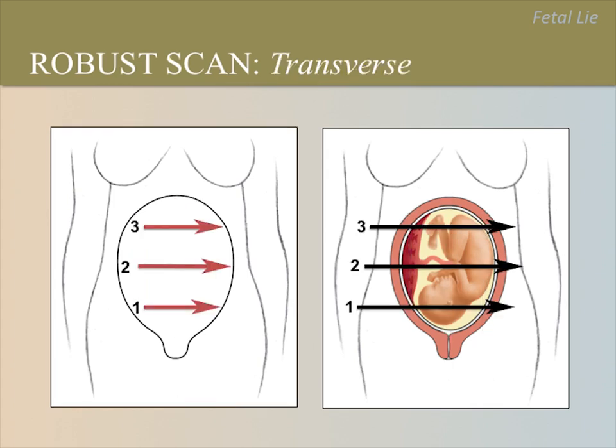For the transverse scans: the first is just above the symphysis in the lower abdomen, the second in the mid-abdomen or mid-uterus, and the third across the upper portion of the uterus — this will be in the upper abdomen in the third trimester of pregnancy. This is a sagittal view of the uterus. What is the fetal lie and presentation and why?